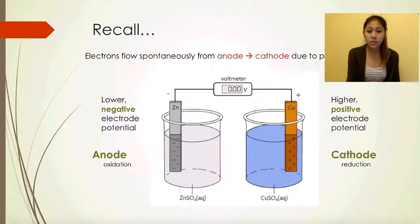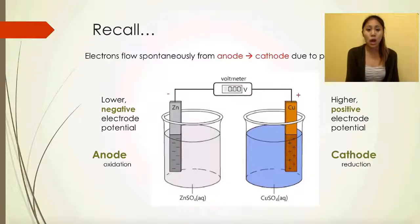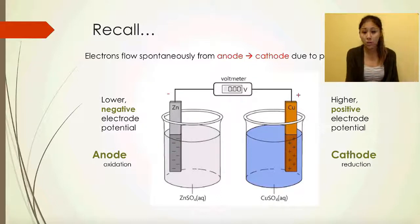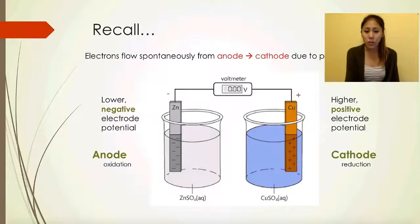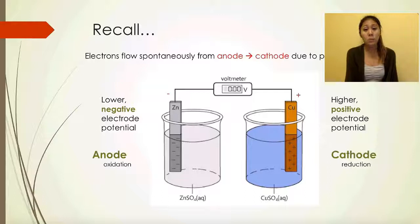Recall from the voltaic cell: we looked at zinc and copper electrodes, with zinc at the anode where the electrode is negative, and copper — having a more positive electrode potential — at the cathode. Electrons flow from anode to cathode, and we generate electrical energy measured with a voltmeter. Each electrode is submerged in its own solution: zinc in a zinc sulfate beaker and copper in a copper sulfate beaker.